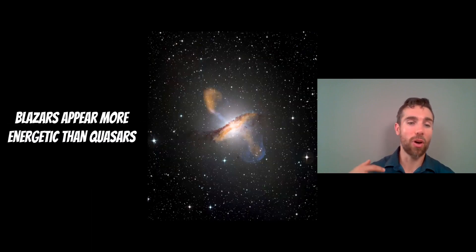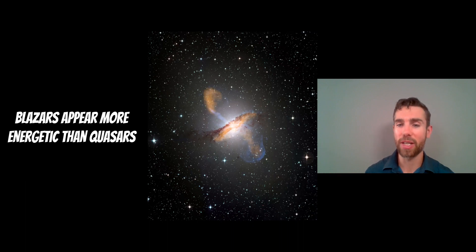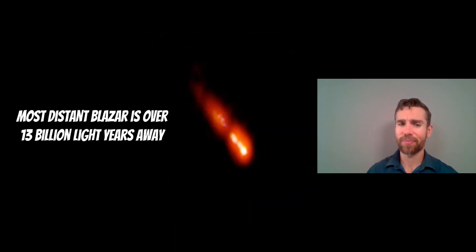Because of that, blazars appear more energetic than quasars because we're looking directly down the jet as opposed to it being slightly at an angle. We're getting the full energy of that jet aimed towards us. This allows us to observe the most distant objects. The most distant blazar discovered so far is about 13 billion light years away—about as far back as we can actually see. Because they're so energetic and the way they're positioned, it allows us to look back so far in time and distance.